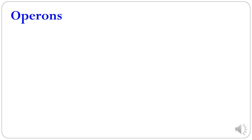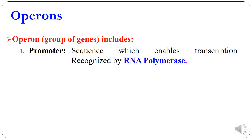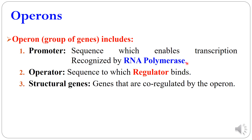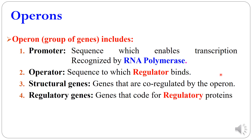Now let us look at the details of an operon. Operons are groups of genes and these include the promoter region, which enables transcription and is recognized by RNA polymerase. The operator is a sequence to which the regulator binds. Structural genes are co-regulated by the operon and form proteins. The regulatory genes code for regulatory proteins. So the basic structure of an operon consists of a promoter sequence, an operator sequence, structural genes, and regulatory genes — these are the minimum four components.